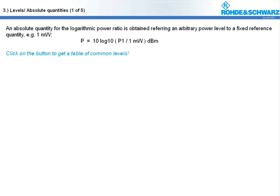This reference quantity is designated by appending an M for milliwatt to dB, which results in dBm. Other frequently used reference quantities include 1 watt, 1 volt or 1 microvolt, which are designated as dB watt, dB volt or dB microvolt.